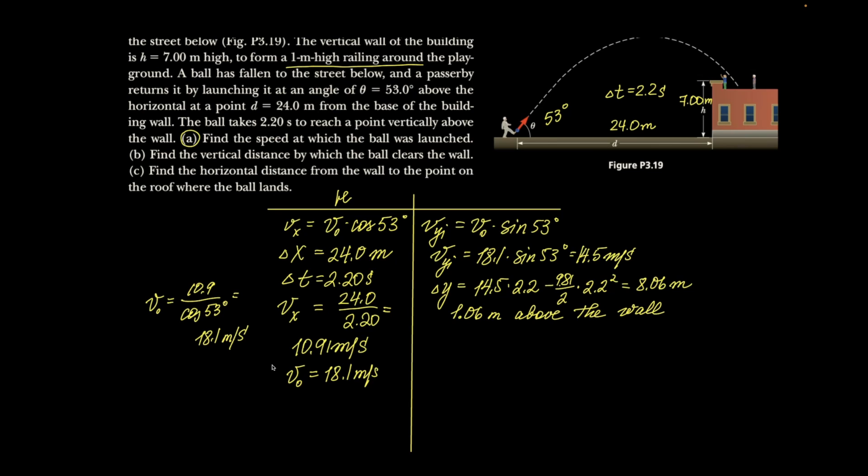To figure out, so we've got a and b, to figure out the horizontal distance, I'm going to now figure out the time that it took to get there. So my change in y for that is going to be 6.